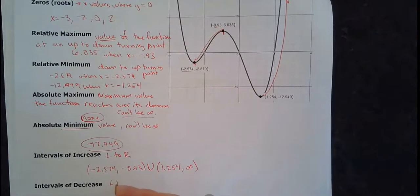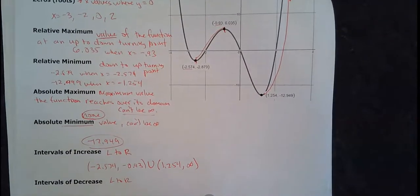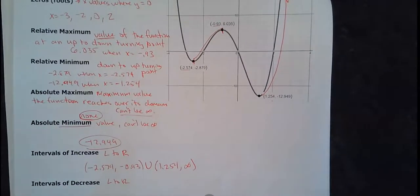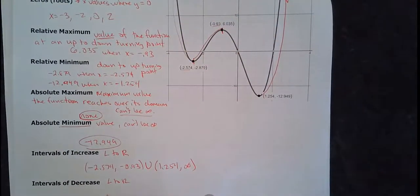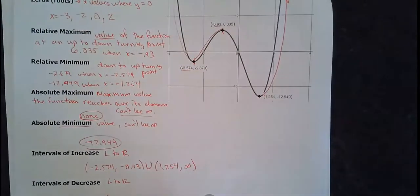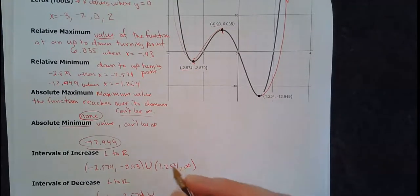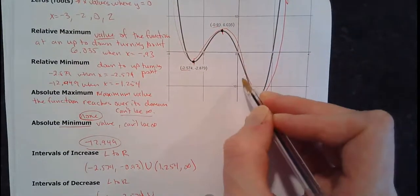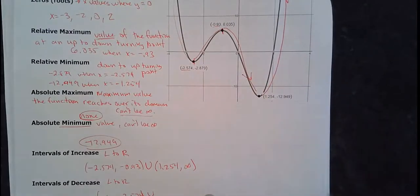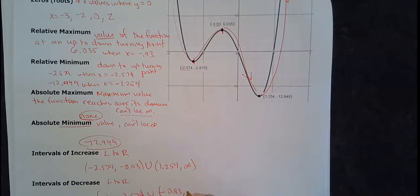For intervals where it's decreasing, again read left to right and find what x-values have y-values going down. The first decreasing interval is from negative infinity up to negative 2.574. Then it's also decreasing from negative 0.93 up to 1.254.